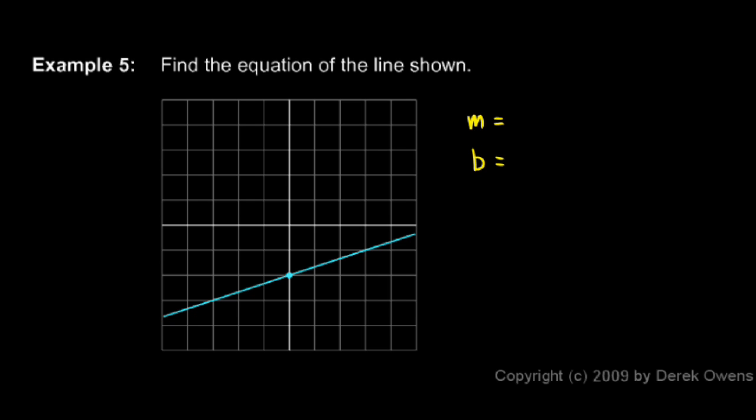The y-intercept here is negative 2. That's our value for b.